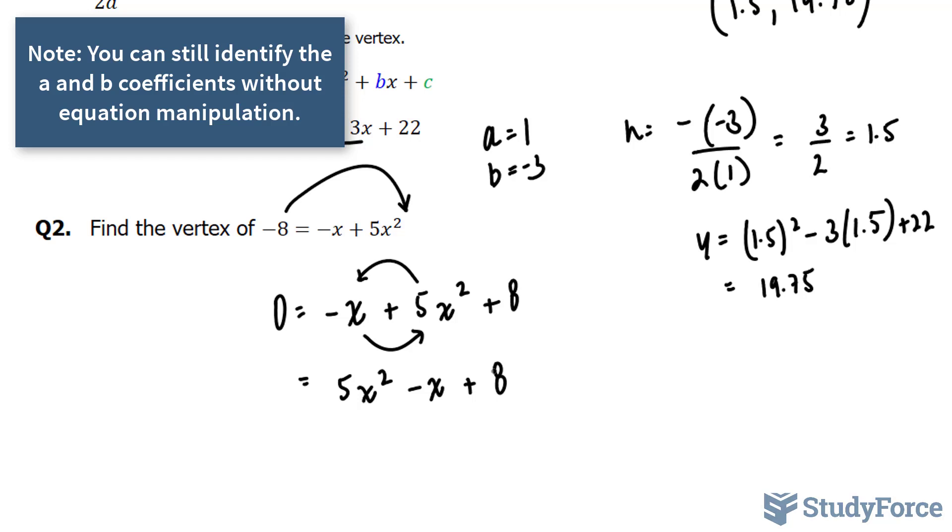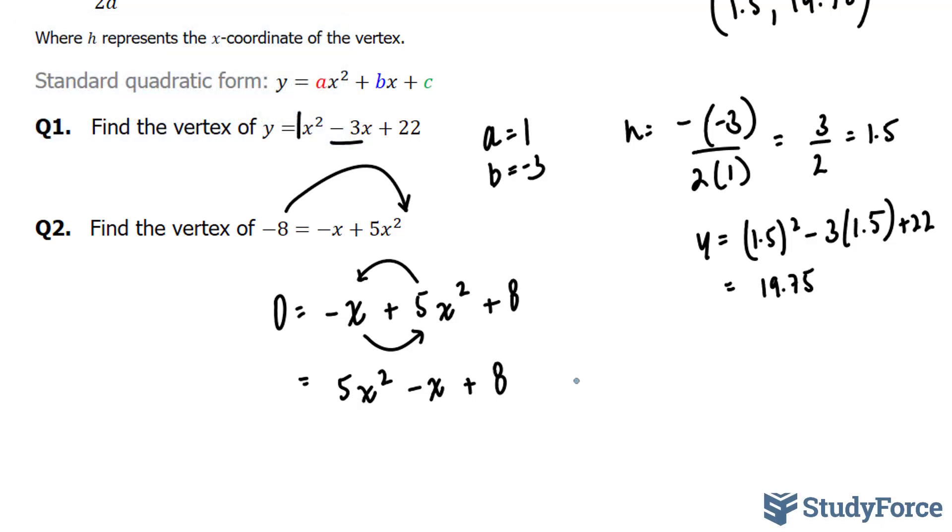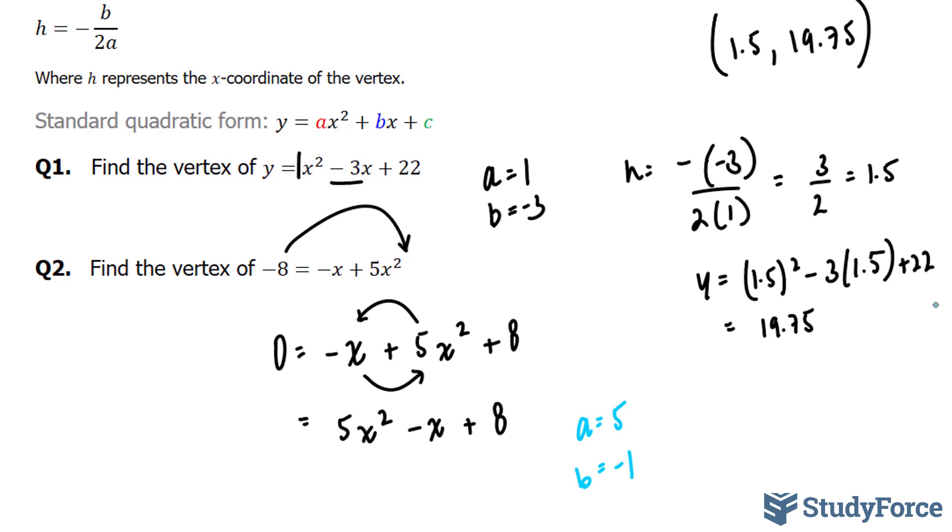And now we know our a and we know our b. Our a is 5 and our b is negative 1. We plug in these values into our formula, the one shown here, where we have h is equal to negative times negative 1 over 2 times 5. And this gives us 1 over 10. So our x coordinate for the vertex now is 1 over 10.